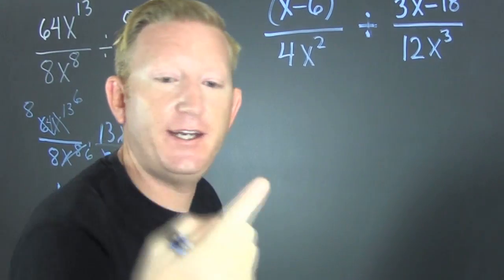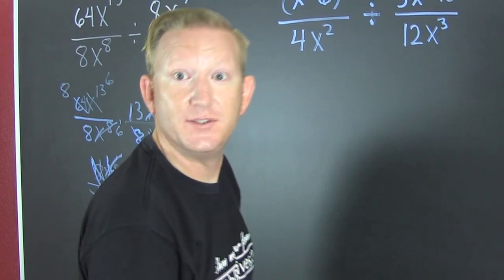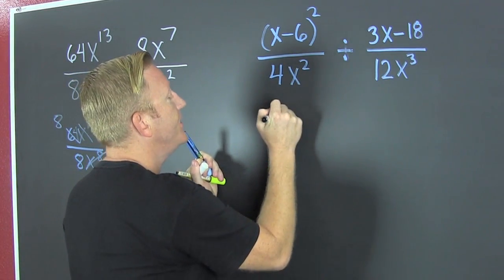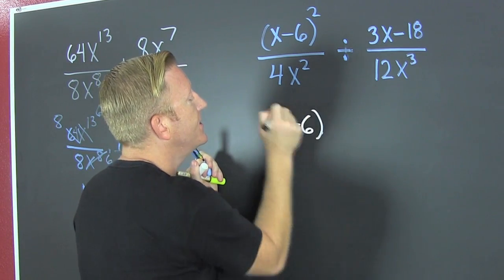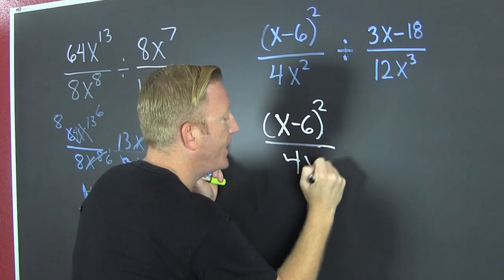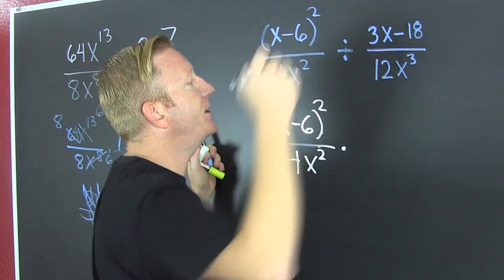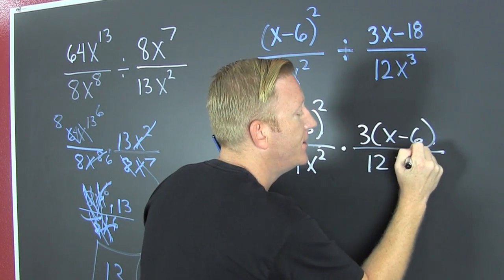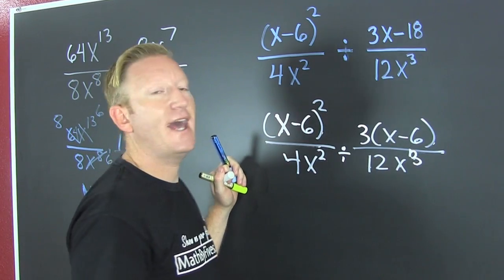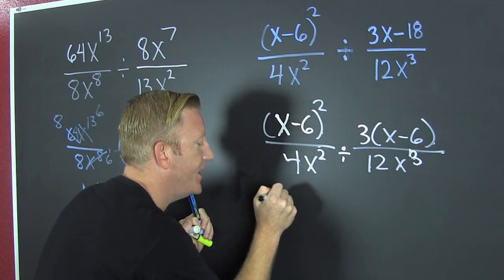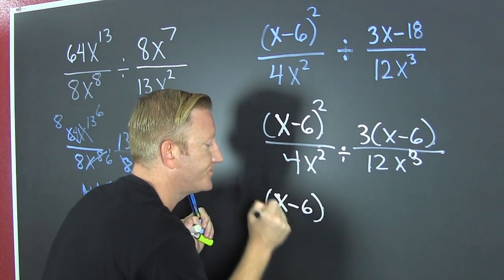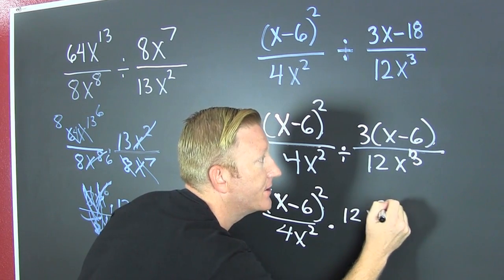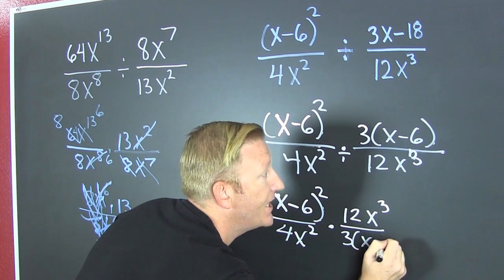This guy over here. Factor, flip, and fight. So we're gonna do that. That's x minus 6 squared. Because which one do I flip? I flip the one in back. First, let's factor, flip, and fight. So that's 3 times x minus 6 all over 12x to the third. We haven't flipped it yet, we're about to do that now. So that's x minus 6 squared over 4. x squared times 12x to the third over 3 times x minus 6.